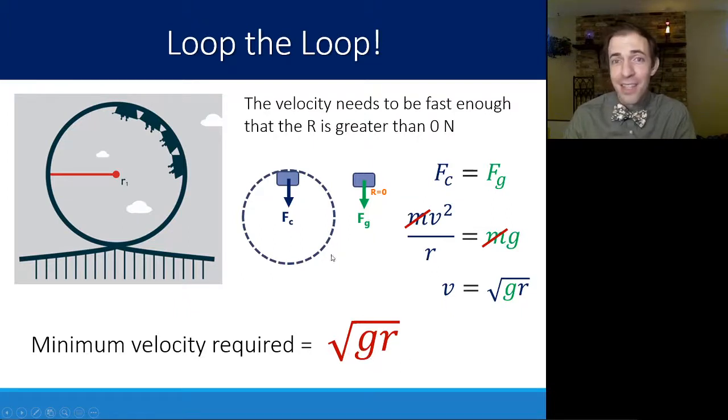Anything faster than this, you're going to have a normal reaction force pushing down. If you've ever experienced a loop-de-loop on a roller coaster, you experience weight still. You're still being pushed into your seat. That's because, thankfully, you are going over the minimum velocity. So R is not zero. R is something. It might be less than your typical weight, but you are still experiencing some sort of push from the roller coaster seat on you.